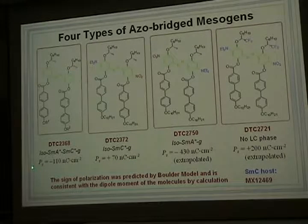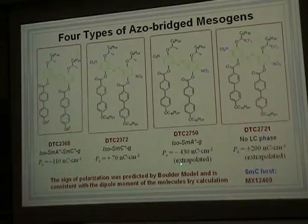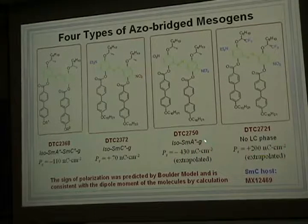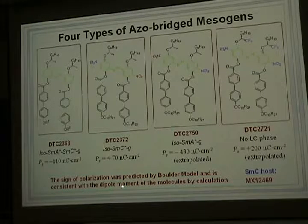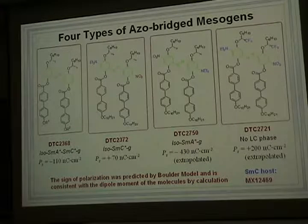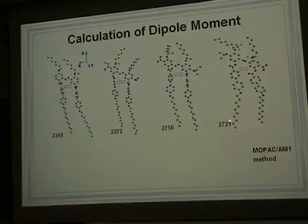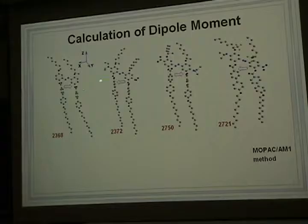For these two compounds we can directly measure the polarization. Since these two compounds do not have smectic C* phase, we obtained extra polarization by doping them into a smectic C* host. The spontaneous polarization predicted by the Osipov model is also consistent with the dipole moment calculated by molecular modeling. This slide shows the molecular modeling structures of the four different compounds, showing the dipole moment for each of them.